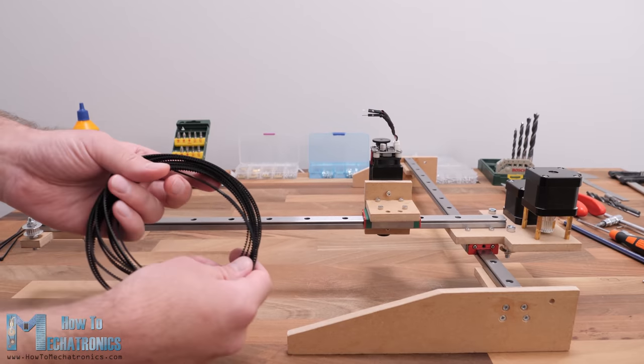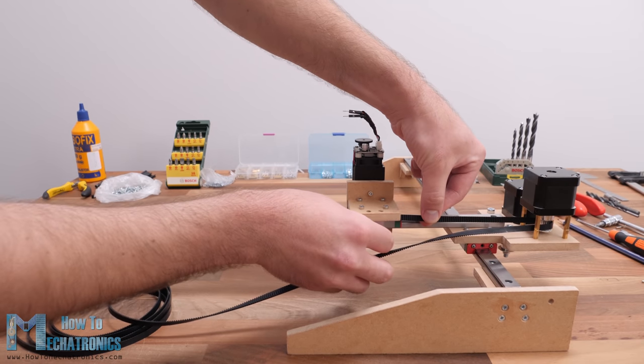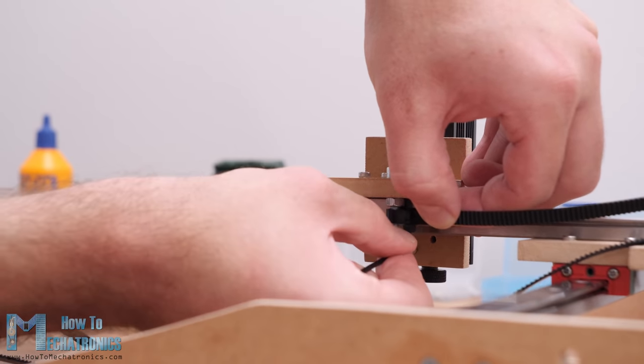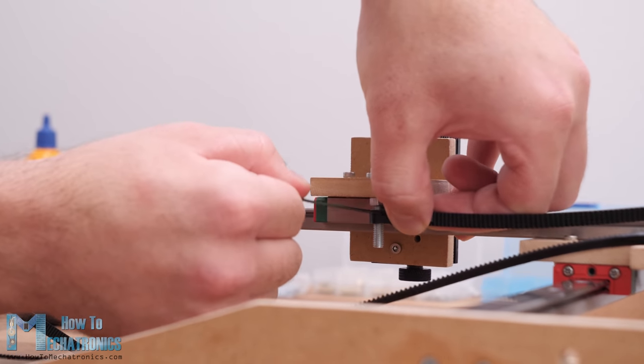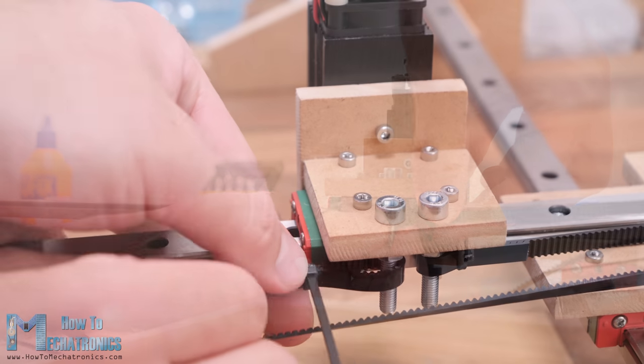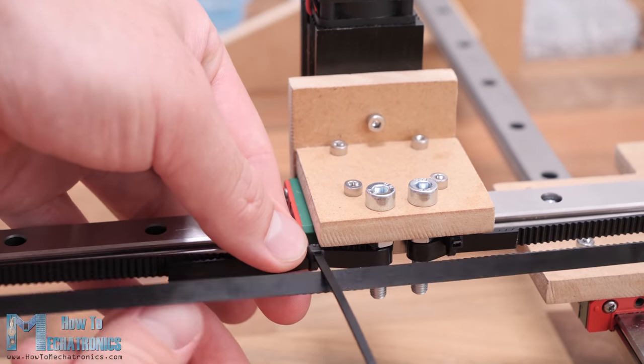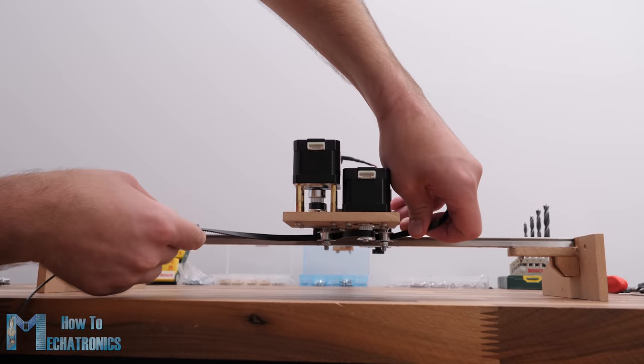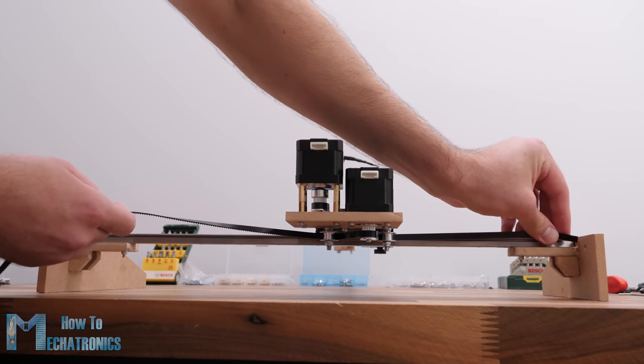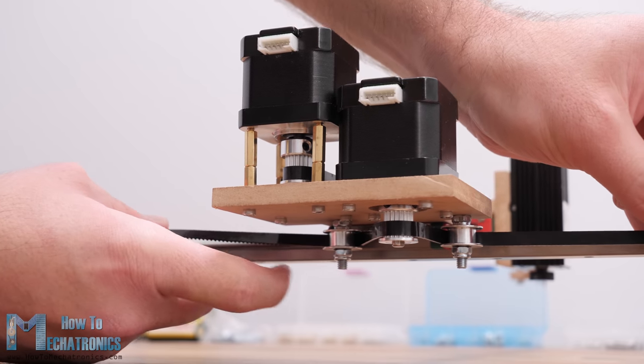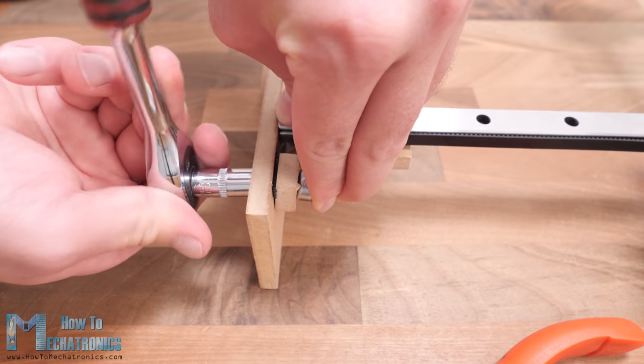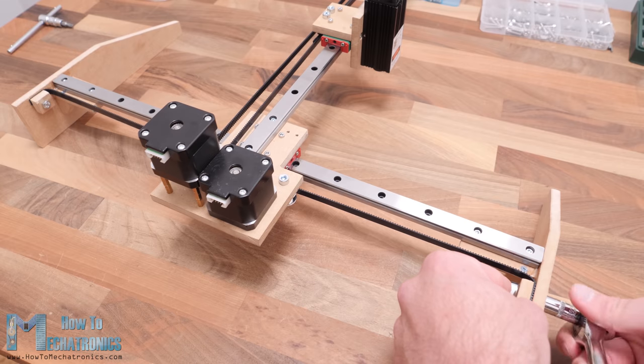I continued with installing the GT2 belts. I measured how much length I needed and cut the belt to size. For securing the belt to the sliding block, I used two M5 bolts and some zip ties. I secured the first side of the belt to the M5 bolt with a zip tie and then tensioned the belt on the other side and secured it to the second bolt using another zip tie. As for the X axis, the belt will be stretched in a line from one to the other side while passing through the three pulleys in a way that will provide tension or grip with the stepper motor pulley. I secured the belt on both sides with a single bolt and a square MDF piece.